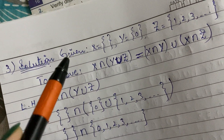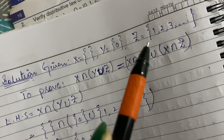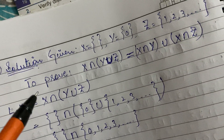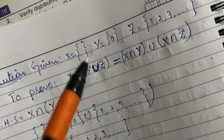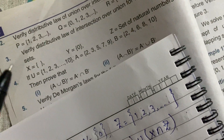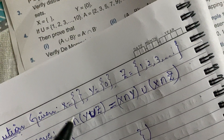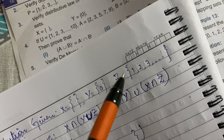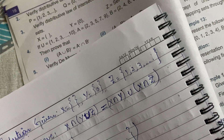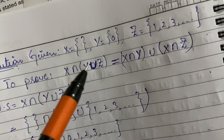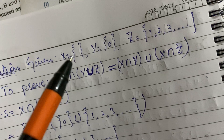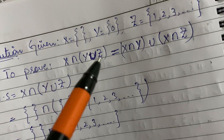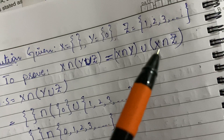First, write the given: X = ∅ (empty set), Y = {0}, Z = {1, 2, 3, ...}. We have to prove the distributive law of intersection over union. Since there is no A, B, C, we replace: X instead of A, Y instead of B, Z instead of C. We have to prove that X ∩ (Y ∪ Z) = (X ∩ Y) ∪ (X ∩ Z).